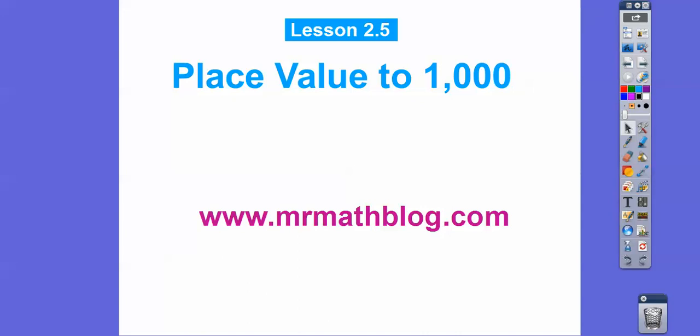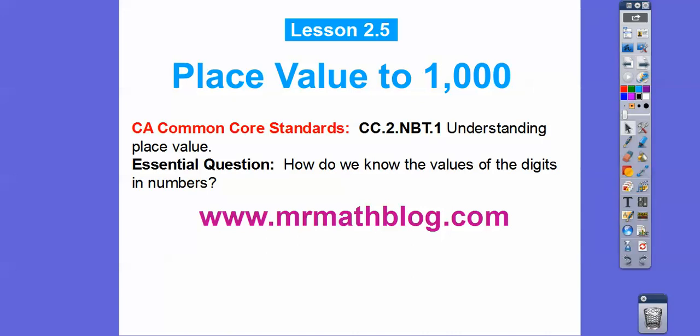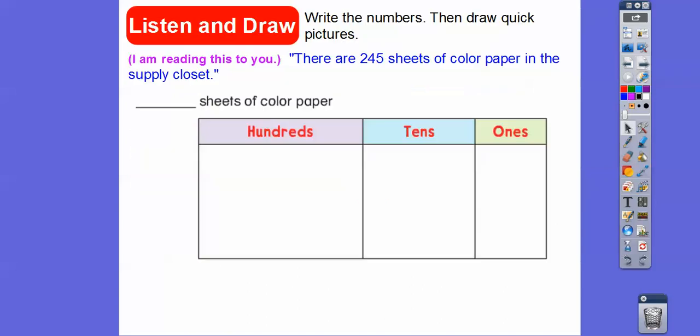Hey everybody, this should be a fast lesson. This is place value to a thousand. So a thousand has a one with three zeros there. Don't forget all your lessons can be found at MrMathBlog.com. So there's our common core strand for most awesome teachers. And our question is, how do we know the values of the digits in numbers? So we're doing more place value.